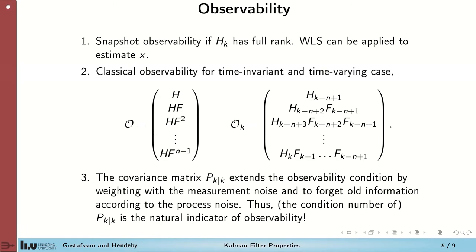Observability. We will talk about three different kinds of observability: snapshot observability, classic observability, and observability in terms of the P matrix. Snapshot observability is when we can derive the full state from one single measurement. This is obtained when H can be inverted.